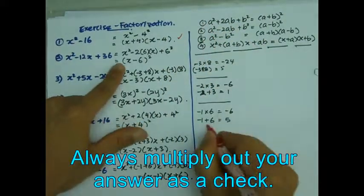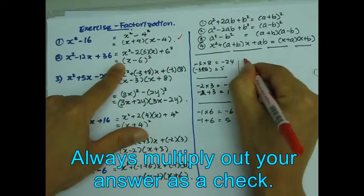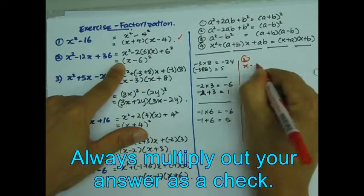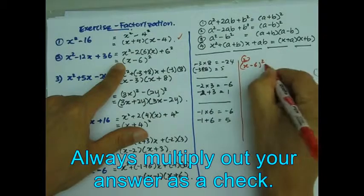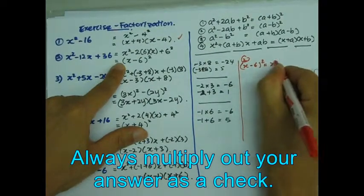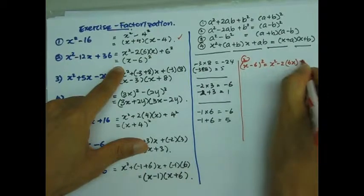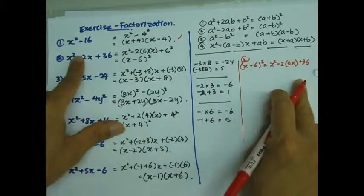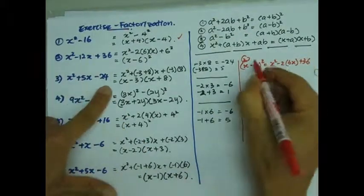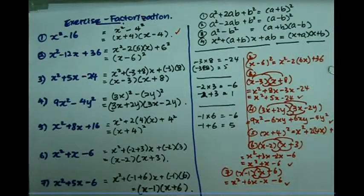How about the second one? Let me check the second one here. x minus 6, everything squared. Expand this, you get x squared minus 2 times 6x plus 36. Excellent. That's the correct answer. Three: expand that.